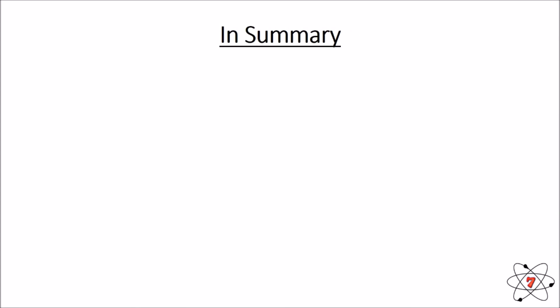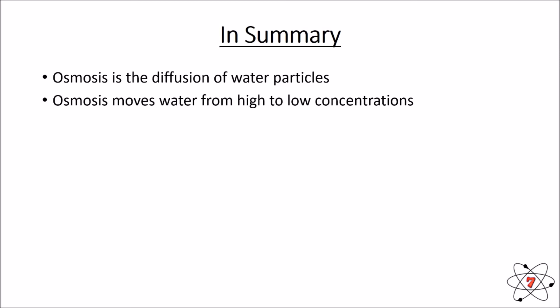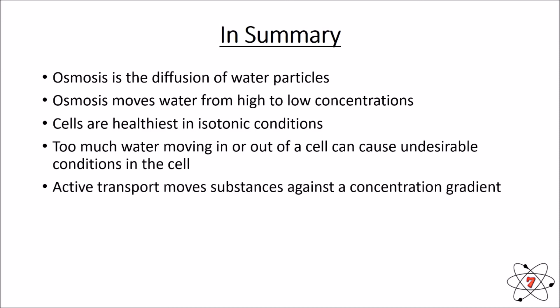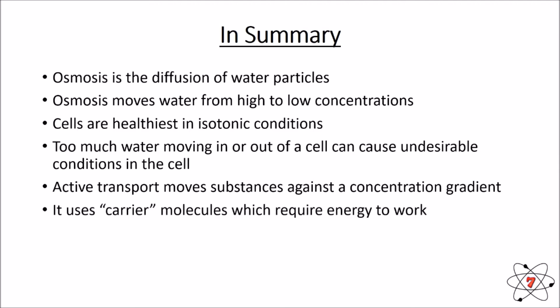In summary: osmosis is the diffusion of water particles, moving water from a high concentration to a lower concentration. Cells are healthiest in isotonic conditions because water moves in and out at the same rate. Too much water moving in or out can cause undesirable conditions. Active transport moves substances against a concentration gradient using a carrier molecule, which requires energy to work. I hope you've understood the key points and I've made science easy for you — until next lesson, keep on learning.